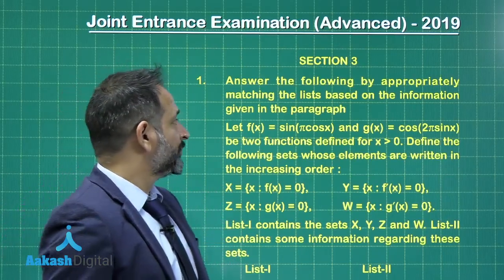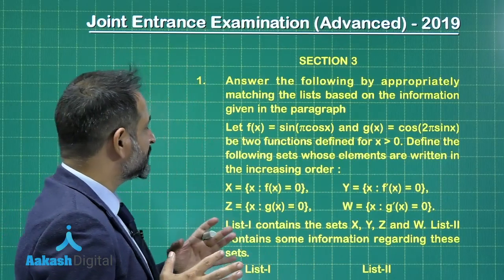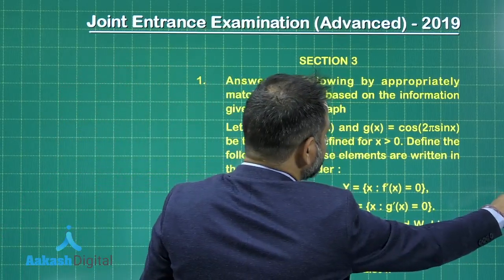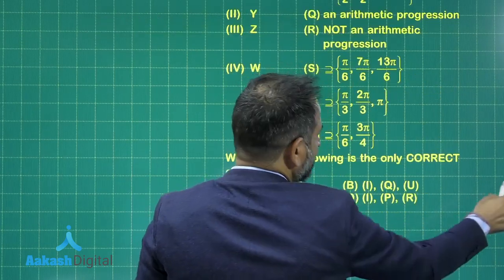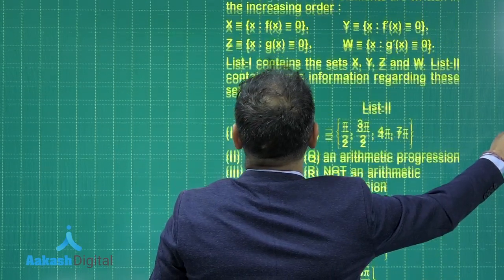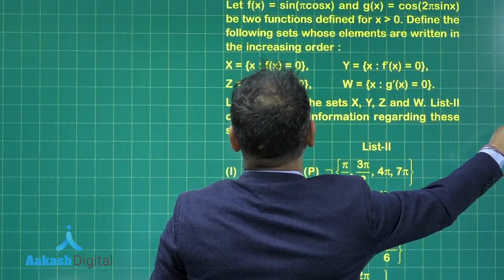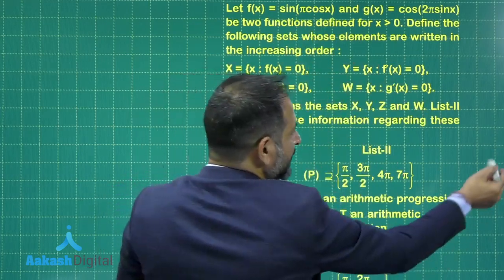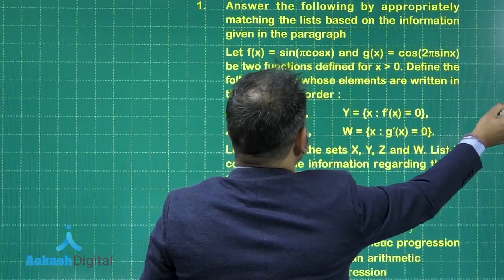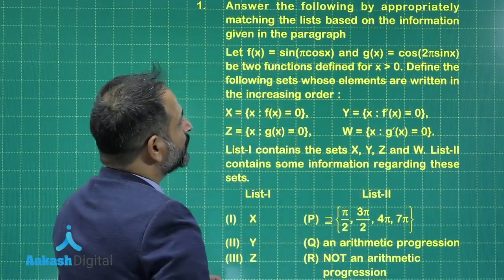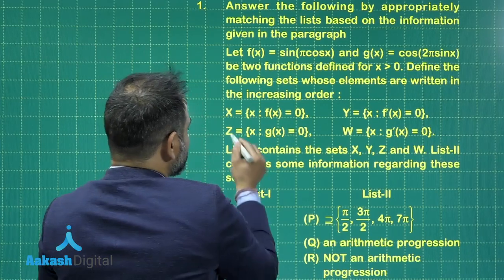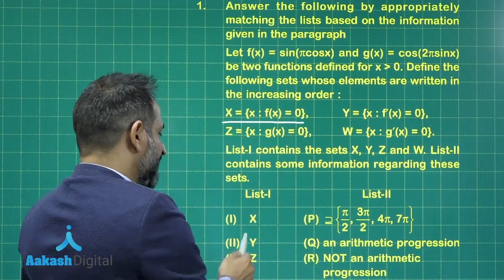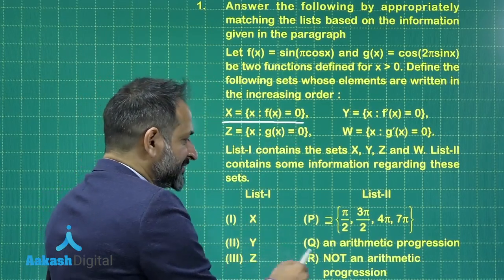Let us see a very different problem. This is Section 3 and we have to match the following options given to us. It is given that X is a set for which f(x) = 0, where f(x) = sin(π cos x), and g(x) = cos(2π sin x). This set contains the elements where f(x) = 0, and we have to match X with the following information.